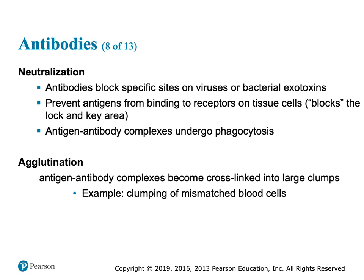Neutralization — they go and prevent that bad guy from binding to anything. They surround themselves around that antigen and cover up all the binding sites so the bad guy physically cannot bind to your own cells. Then the body sees that antigen-antibody complex and a phagocyte eats it. Agglutination is a very similar situation — you can see it when you give someone with type A blood type B blood. They link up — not necessarily a full surrounding, but a whole bunch of antibody-antigen complexes linked together in a chain.